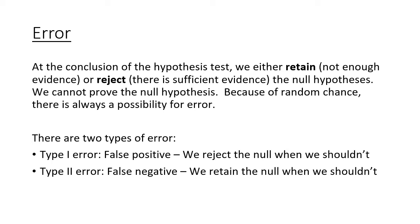When doing hypothesis testing, like everything else, there's always a chance that it goes wrong — there's always a chance we make an error. At the conclusion of our hypothesis test, we're either going to retain the null hypothesis, meaning there's not enough evidence to overturn what's previously accepted, or we're going to reject it. The important thing to remember is that we can never actually prove the null hypothesis. There are going to be two types of errors: a Type 1 or a Type 2.